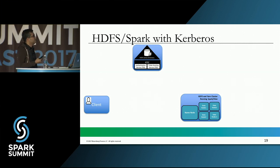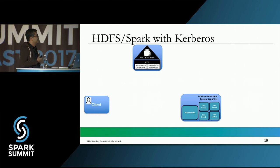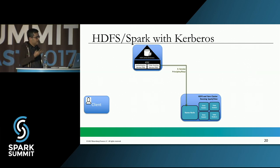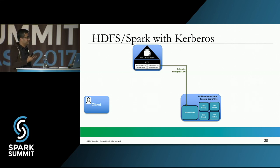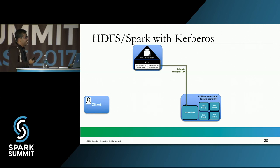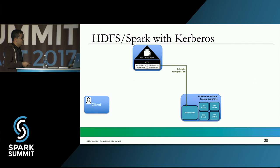The KDC server has two essential services: the Authentication Service and the Ticket Granting Service. When the HDFS cluster starts up, it talks to the KDC server and gets a service principal and keys. The service principal is created for every specific service that HDFS runs — for example, if it runs Hive, there will be a service principal for Hive.